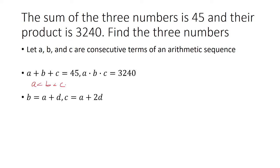So in order to get B from A, you have to add a common difference. So B could be represented as A plus D. And because C is greater than A and B, C is going to be A plus 2D.